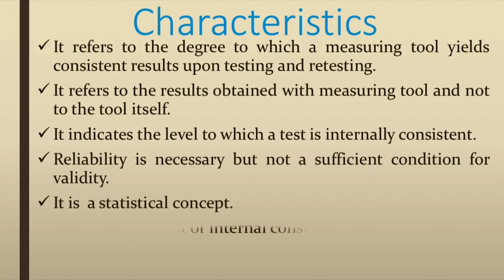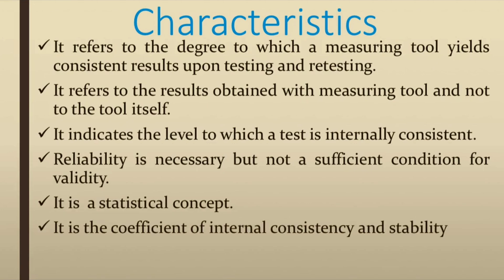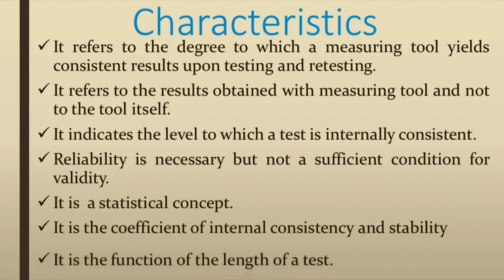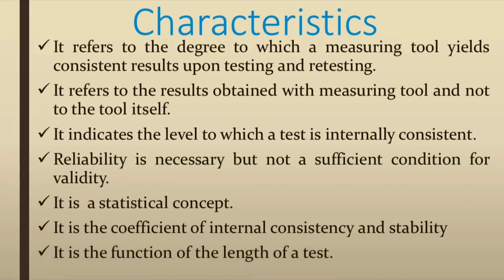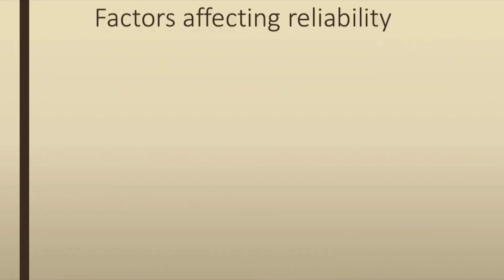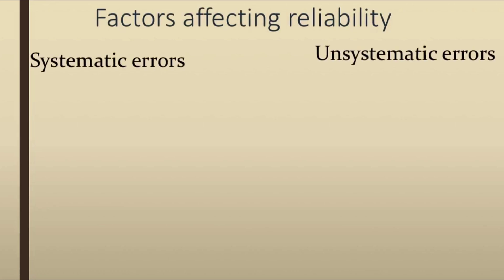Reliability is a necessary but not sufficient condition for validity. It is a statistical concept — specifically, an internal consistency coefficient — and the stability of the tool is a function of the length of the test. Psychologists have identified two categories of factors that affect the reliability of a test: systematic errors and unsystematic errors.